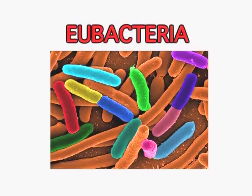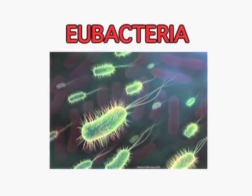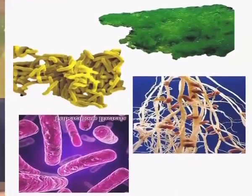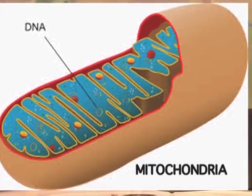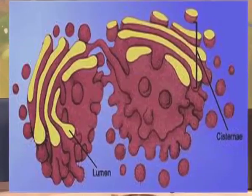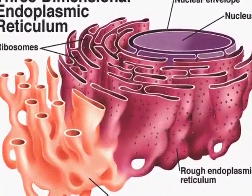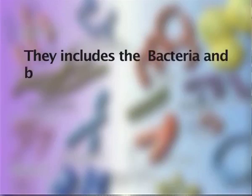Eubacteria are of different colors, shapes, etc. These eubacteria include all microscopic organisms and are prokaryotes — meaning cell organelles such as mitochondria, Golgi apparatus, and endoplasmic reticulum are absent in them, and they do not have a well-defined nucleus. They include bacteria and blue-green algae.